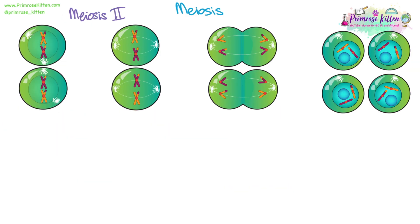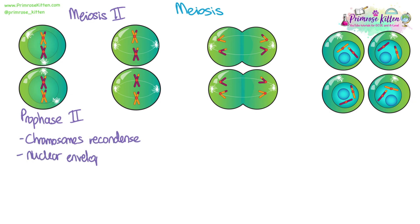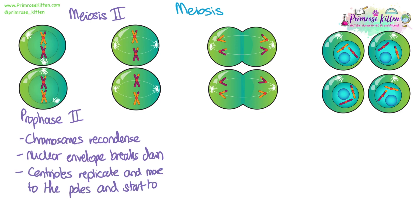Now onto meiosis two, which is going to make our four cells. Prophase two: the chromosomes recondense and the nuclear envelope breaks down again. The centrioles replicate — because there would only have been one in each cell after division — and they move to the poles and start to form spindle fibres again.